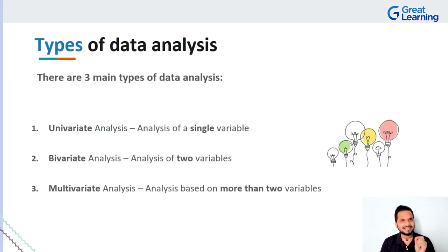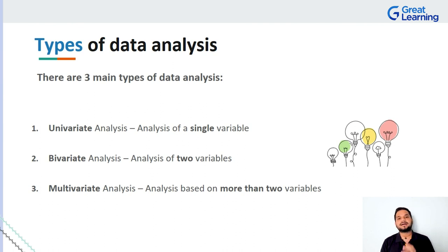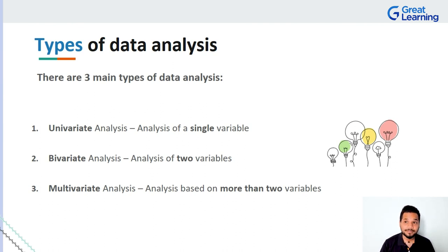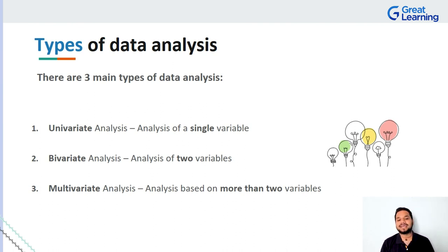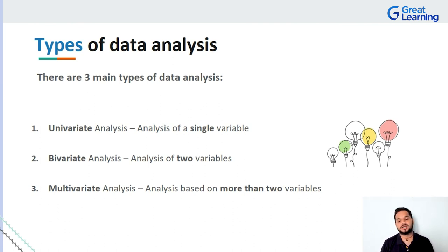There are three very important types of data analysis: univariate analysis, bivariate analysis, and multivariate analysis. Univariate — 'uni' stands for one — is used whenever you are assessing and analyzing a single variable that will have an impact on the outcome. Bivariate is used when you have two variables affecting the outcome. And multivariate analysis is used whenever you have more than two variables to work with.